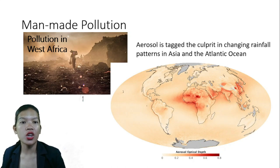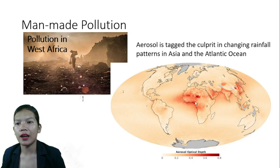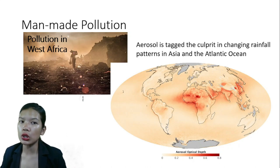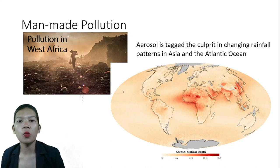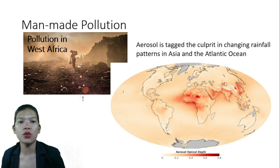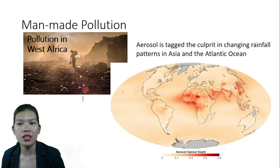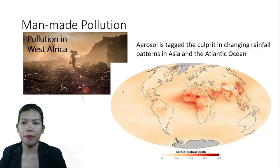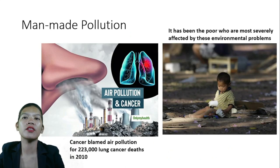These climatic disruptions have caused drought all over Asia and Africa and accelerated desertification in certain areas. Twenty years ago, there were over 50,000 rivers in China, but by 2013, as a result of climate change, uncontrolled urban growth, and rapid industrialization, 28,000 of those rivers had disappeared.